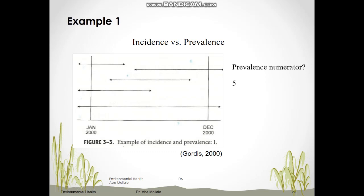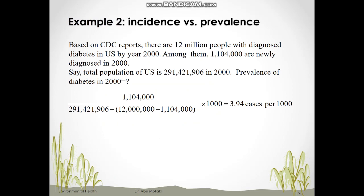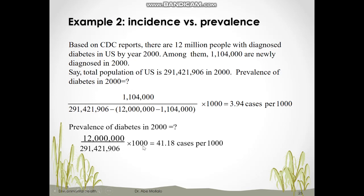Using the CDC diabetes example again: prevalence is the number of existing cases during 2000, which is 12 million, divided by the total population of 291 million. Multiplying by 1,000 gives approximately 41 per 1,000. Comparing the two: incidence is about 3.94 per 1,000 and prevalence is about 41 per 1,000. For chronic diseases like diabetes, incidence and prevalence are very different. For acute infectious diseases, they are closer because patients recover quickly.